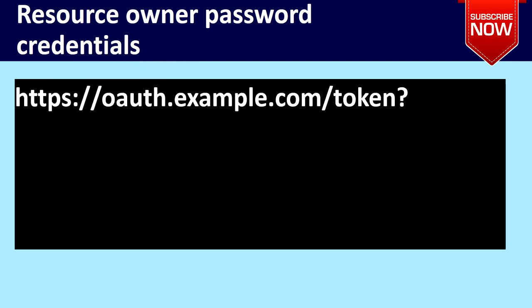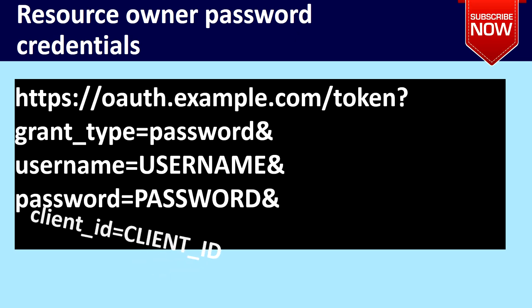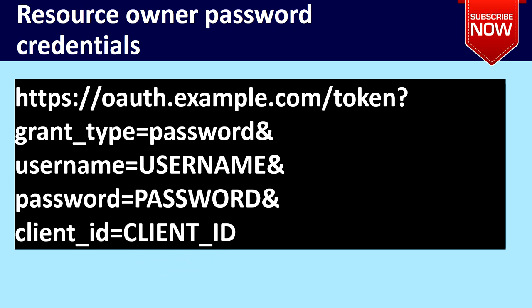Next, resource owner password credentials. For this grant type, you send the username and password directly. The grant type should be set to password. The URL ends with token, not authorize. You send the grant_type as password, along with username, password, and client_id.